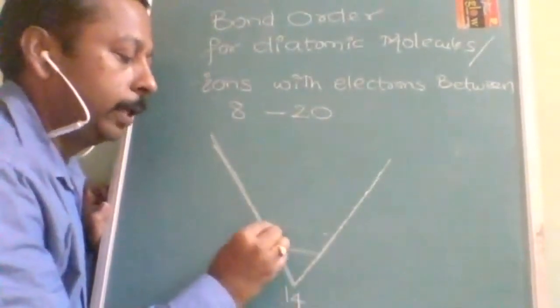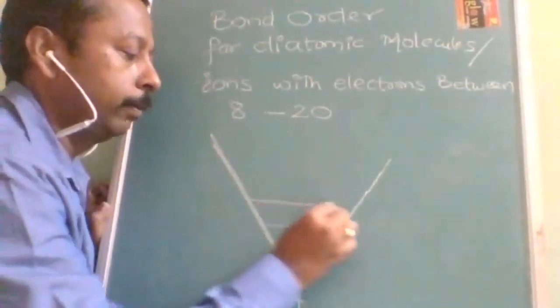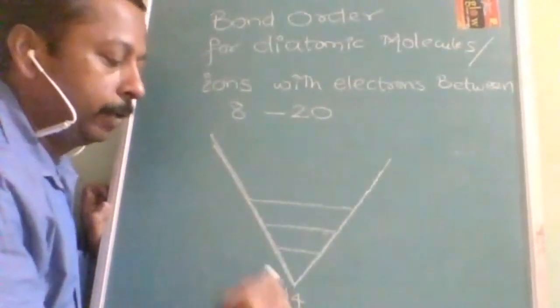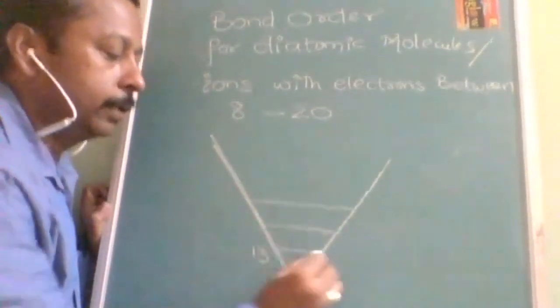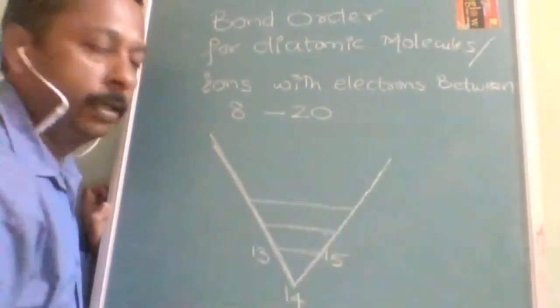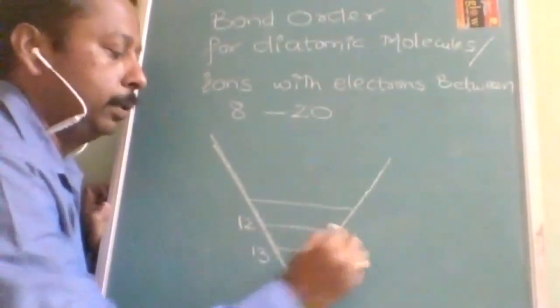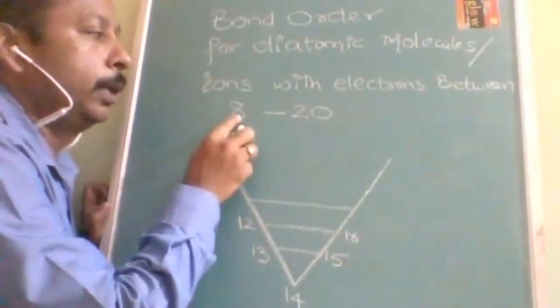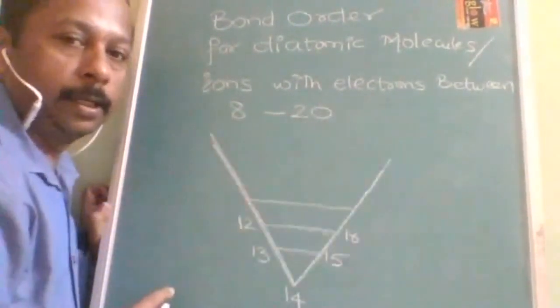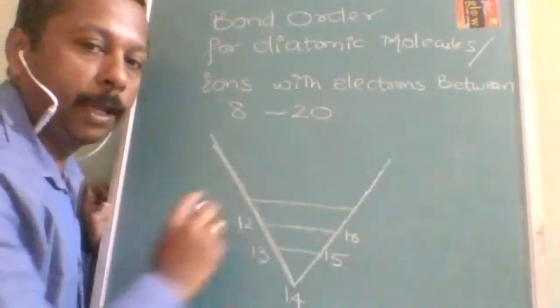OK, now you keep on writing into the parallel lines like that. What you have to write, you have to write it into the parallel lines. OK, now here if it is 14, one less, one more here, 13, 15, OK, 12 and 16. Likewise up to 8 this side, 20 this side. You should keep on running the parallel lines.